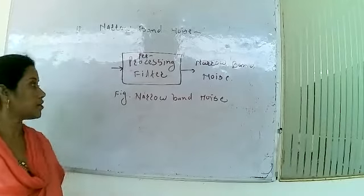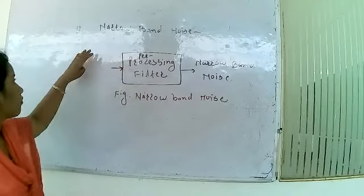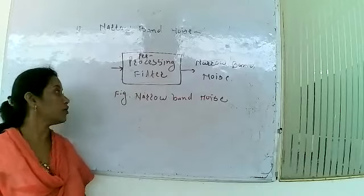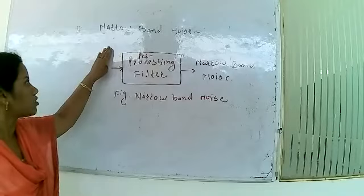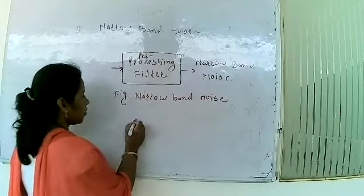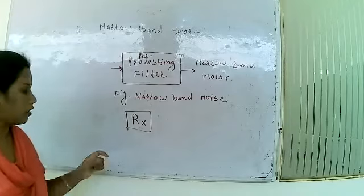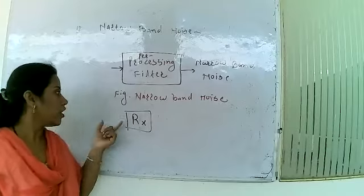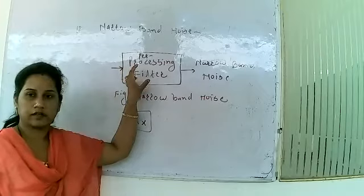Today we will see the next topic from digital communication and narrow band noise. In the last lecture we saw the effect of linear filtering on noise. Now, the next topic is narrow band noise. For every communication system, at the receiver, every receiver receives signals which are added with noise. That's why generally in the communication receiver they have added a pre-processing filter.